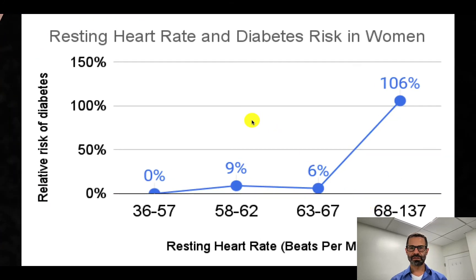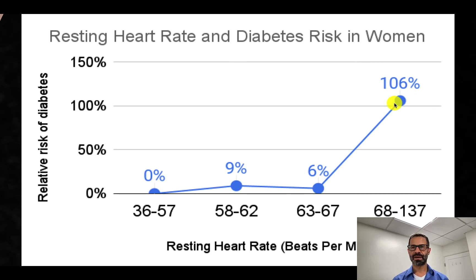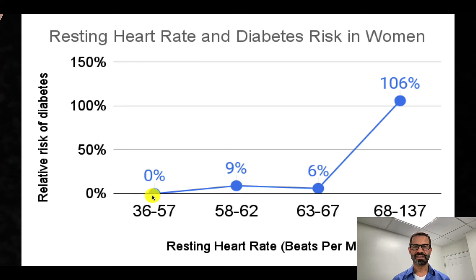This graph shows the results for women. The x-axis is the resting heart rate, and the y-axis is the relative risk of diabetes during the follow-up period. Compared to women whose resting heart rate was 36 to 57, as resting heart rate increases, so does the relative risk of developing diabetes, reaching as high as a 106% increased relative risk compared to someone with a heart rate of 57 or below.